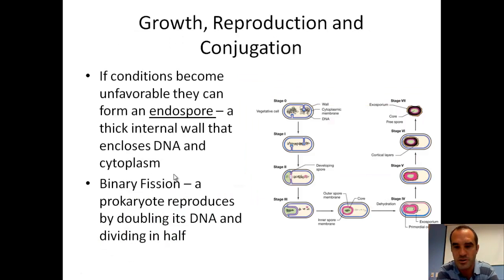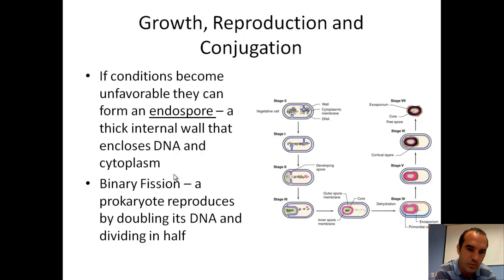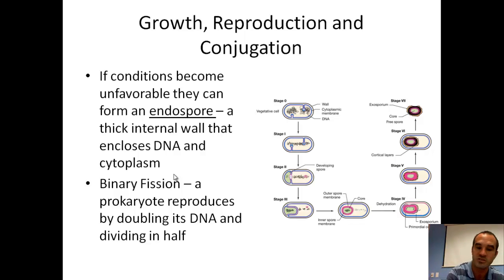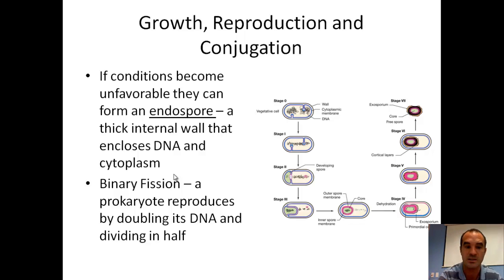If bacteria are in an environment not suitable for them — if they don't have food or nutrients — they can form something called an endospore. It's like a little capsule that allows them to stay in the area and keeps their genetic material intact. It's almost like a seed in a plant. That endospore allows them to sit on a tabletop waiting for conditions to be right, and then if water and a food source become available, they can grow back their cell membrane and cell wall and start functioning like a normal bacterium.